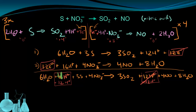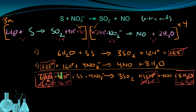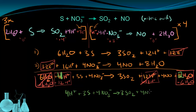I can do the same combination with water molecules. I have six waters on the left and eight waters on the right. I subtract the six from the left side, which completely removes that term, and when I subtract six on the right side that reduces it to two waters. So the cleaned-up equation is: 4H⁺ + 3S + 4NO₃⁻ yields 3SO₂ + 4NO + 2H₂O.